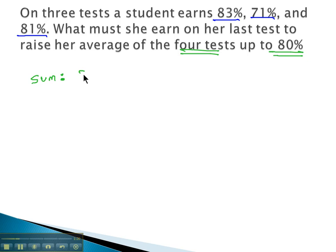Well, if there's 80% on four tests, we can do 80 times 4. She needs 320 points in order to get that average or mean of 80%.